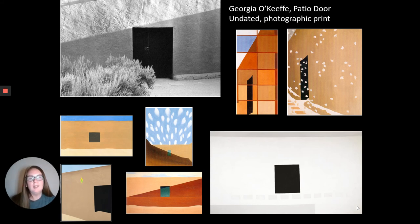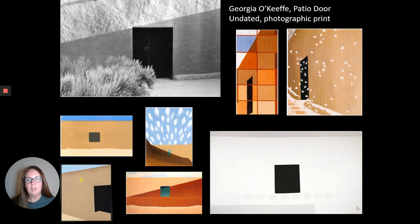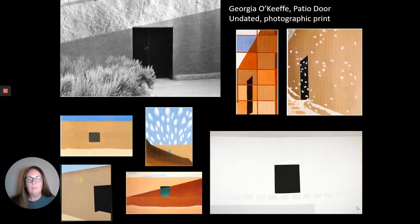Georgia O'Keeffe moved to New Mexico permanently in 1949 after her husband passed away, since he had lived in New York City. After he passed, she moved to New Mexico and bought her home at Ghost Ranch and her second home in Abiquiu. What you see here is a patio door at her Abiquiu house that she just loved and painted over and over again. She painted the same door from various angles, in different seasons, and different times of day — we can tell by the different shadows crossing the door. You can look at the same subject matter and keep finding it interesting in different ways.